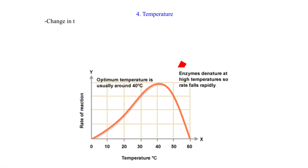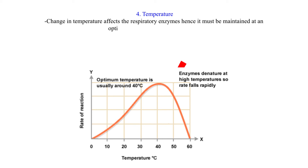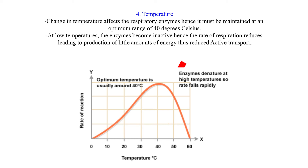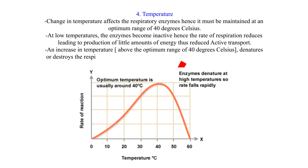4. Temperature. Change in temperature affects the respiratory enzymes, hence temperature must be maintained at an optimum range of 40 degrees Celsius. At low temperatures, the enzymes become inactive, hence the rate of respiration reduces, leading to production of little energy and thus reduced active transport. An increase in temperature above the optimum range of 40 degrees Celsius denatures or destroys the respiratory enzymes, hence respiration stops and so does active transport.